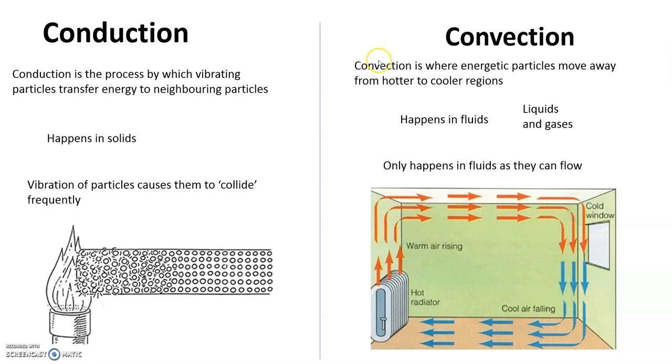Convection current is where there's energetic particles. They move away from hotter regions to cooler regions. It can only happen in fluids. And fluids have a special meaning in physics. It means a liquid or a gas.